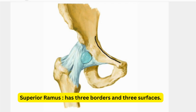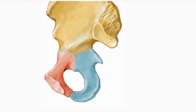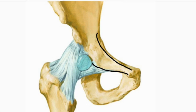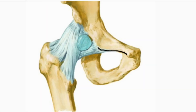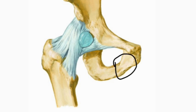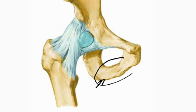The anterior border is also known as the obturator crest, which extends from the iliac tubercle to the acetabular notch. The inferior border is sharp and forms the upper margin of the obturator foramen. The pectineal surface is a triangular area lying between the anterior and superior borders. The pelvic surface lies between the superior and inferior borders, and the obturator surface lies between the anterior and inferior borders. The inferior ramus extends from the body of the pubis to the ramus of the ischium, and after joining the ramus of the ischium they together form the ischiopubic ramus.